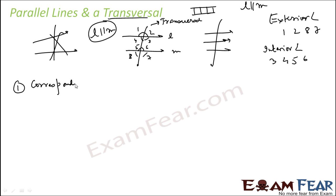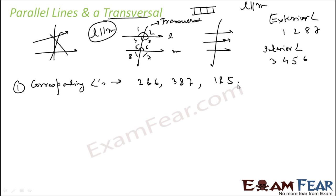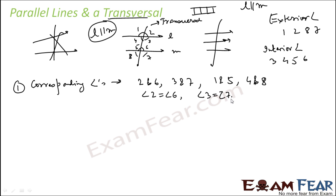Let's talk about corresponding angles. The corresponding angle pairs are: angle 2 and angle 6, angle 3 and angle 7, angle 1 and angle 5, and angle 4 and angle 8. Please pay attention — these are the corresponding angles and they are all equal. So angle 2 equals angle 6, angle 3 equals angle 7, angle 1 equals angle 5, and angle 4 equals angle 8.